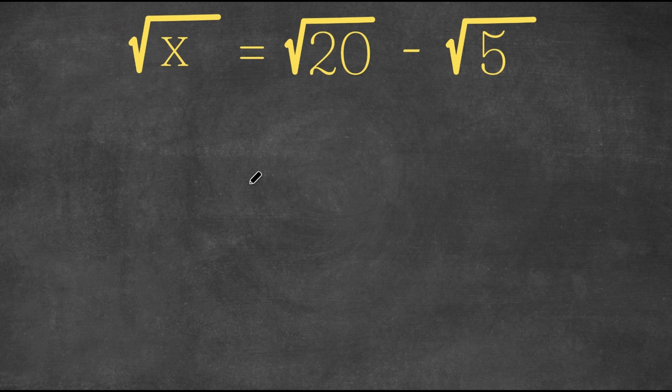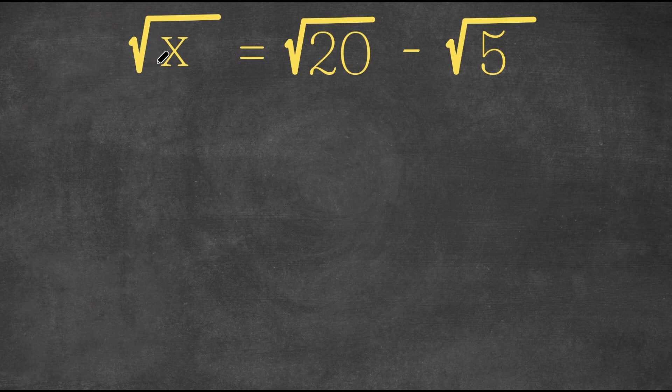Hey guys, welcome back to Qlik Academics. In today's video, I'm going to be teaching you guys how to solve this radical problem. So we have the square root of x is equal to the square root of 20 minus the square root of 5.